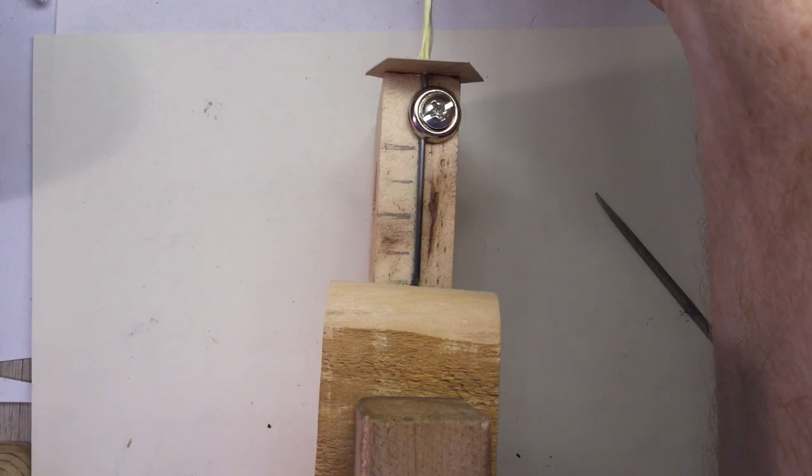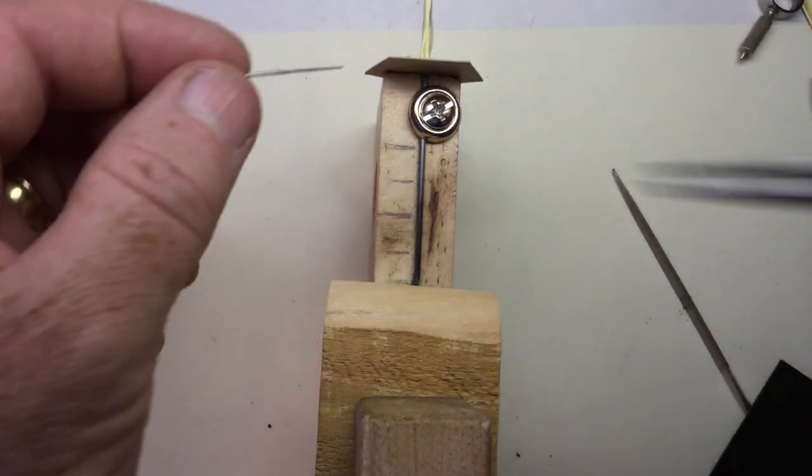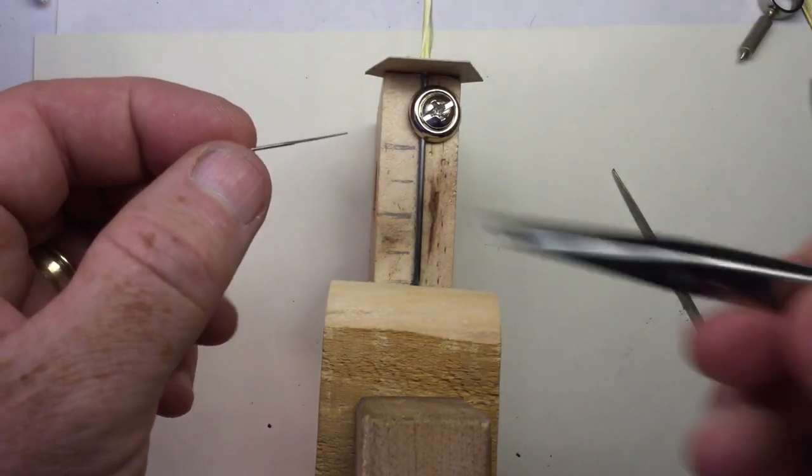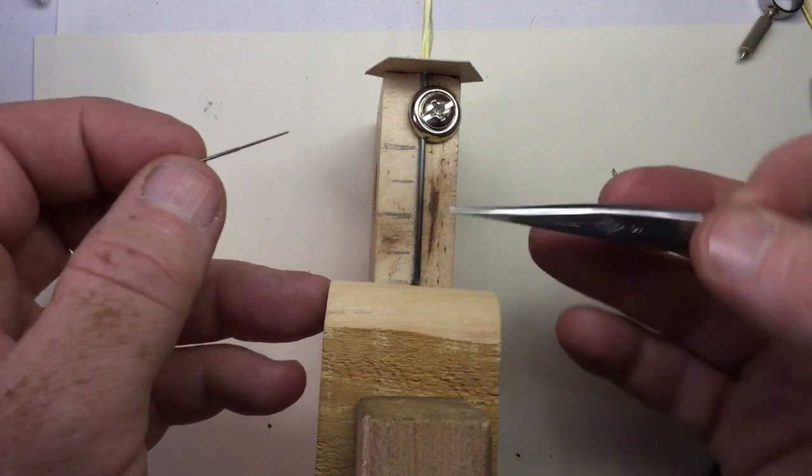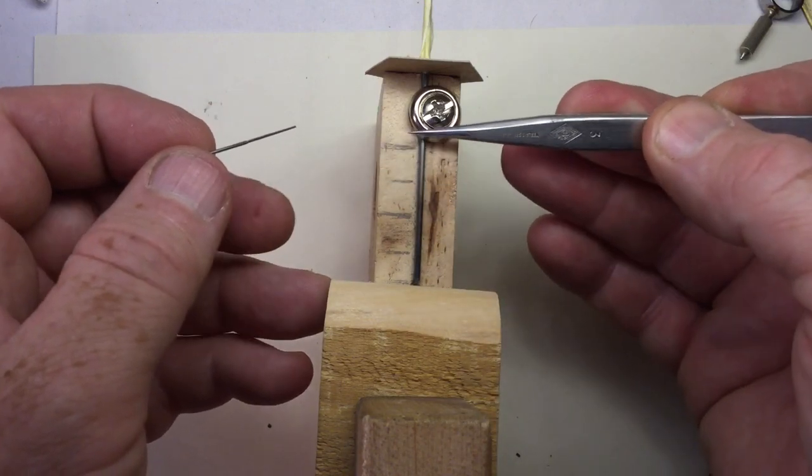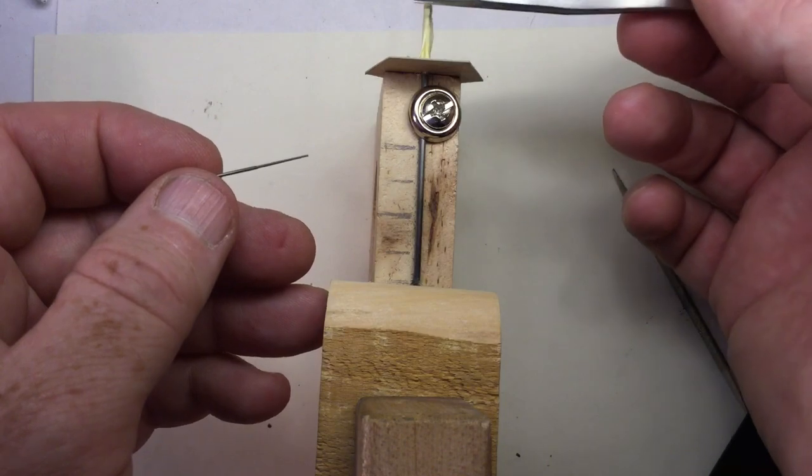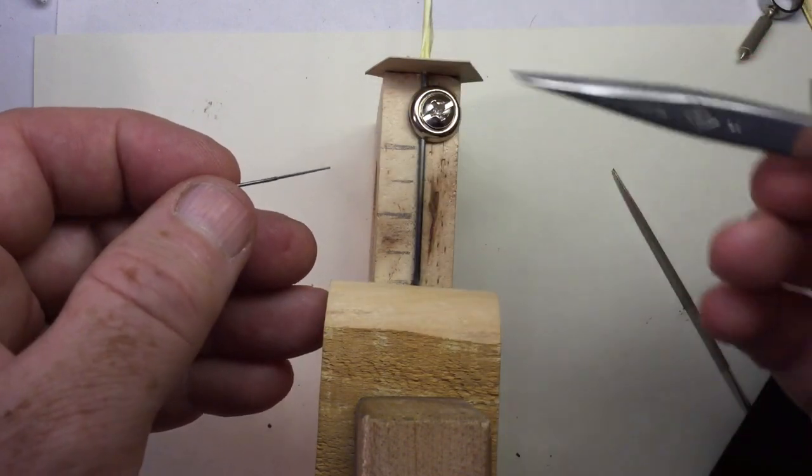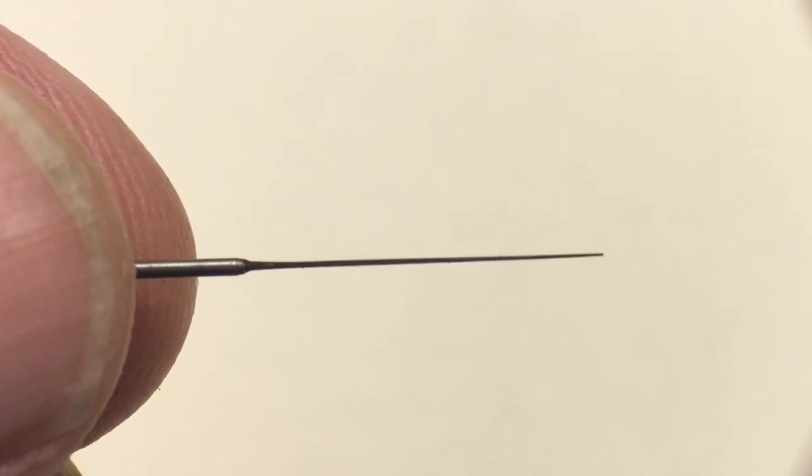And onward, until you've got it down to the size you want. With tiny watchmakers brooches, you'd keep going down in size, and by bumping into the washer, you would end up with a distinct step between the handle and the brooch proper. Like this one.